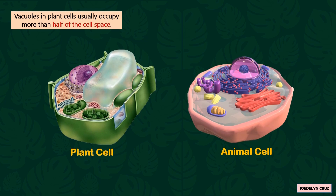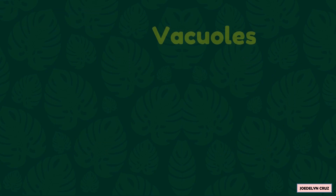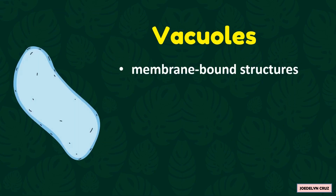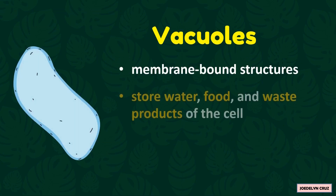Vacuoles in plant cells usually occupy more than half of the cell space. Vacuoles are membrane-bound structures. They store water, food, and waste products of the cell.